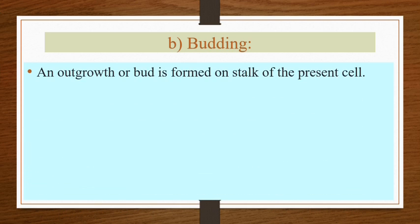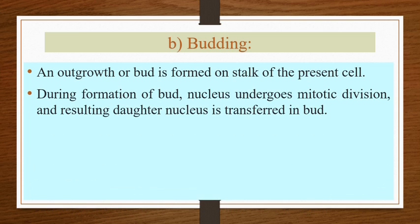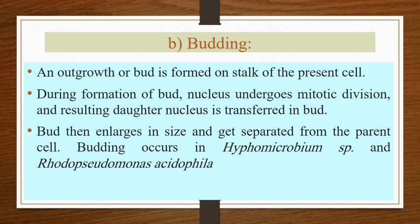The second method is budding. An outgrowth or bud is formed on the stalk of the parent cell. During bud formation, the nucleus undergoes mitotic division and the resulting daughter nucleus is transferred into the bud. The bud then enlarges in size and gets separated from the parent cell. Budding occurs in Hyphomicrobium species and Rhodopseudomonas acidophila.